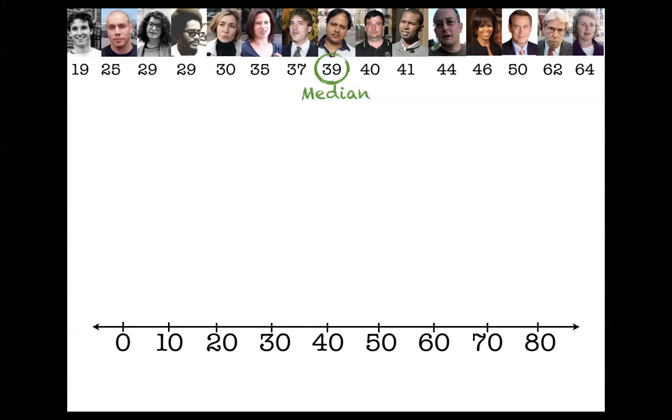Here's what we're going to do with the median to make a box and whisker plot. We're going to find that number 39 on the number line, and we're going to put a little line there, a little bar, a little segment. Why are we going to do that? You'll see.